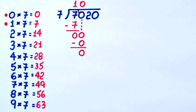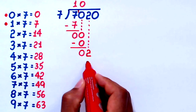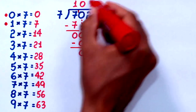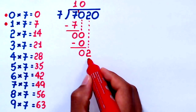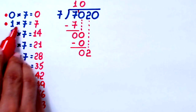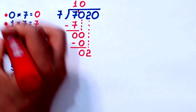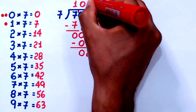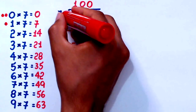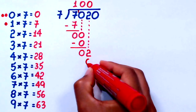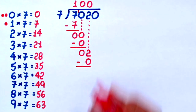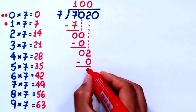After the subtraction, I bring down the next digit. By doing so, here I have 2. How many times does 7 go into 2 without going over? 1 times 7 is already too much, so the number we were looking for is 0. I write 0 here. Since 0 times 7 equals 0, that is what I write here. And now we subtract — 2 minus 0 is still 2.